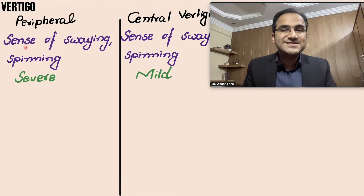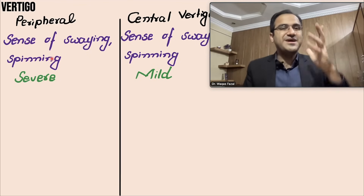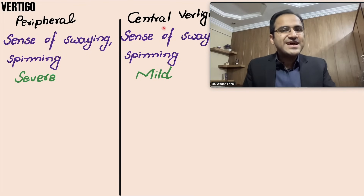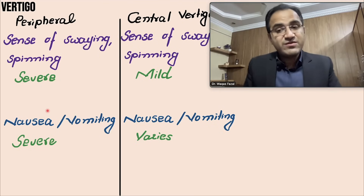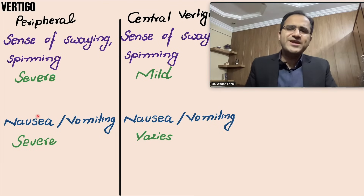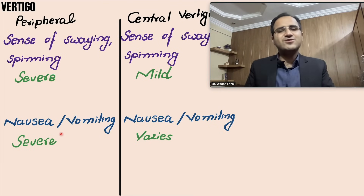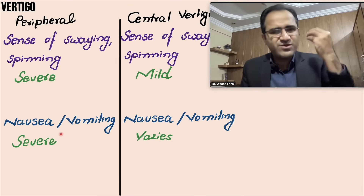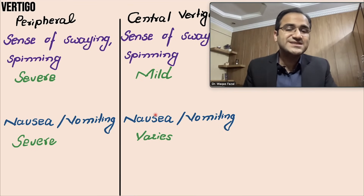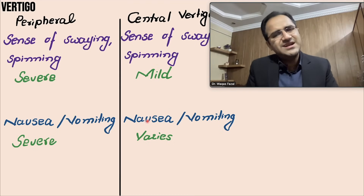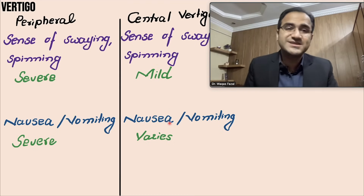In peripheral vertigo, the sensation of swaying and spinning will be severe, whereas in central vertigo it will be mild. The sensation of nausea and vomiting will also be severe in peripheral vertigo. In central vertigo, nausea and vomiting can vary from mild to moderate to severe.